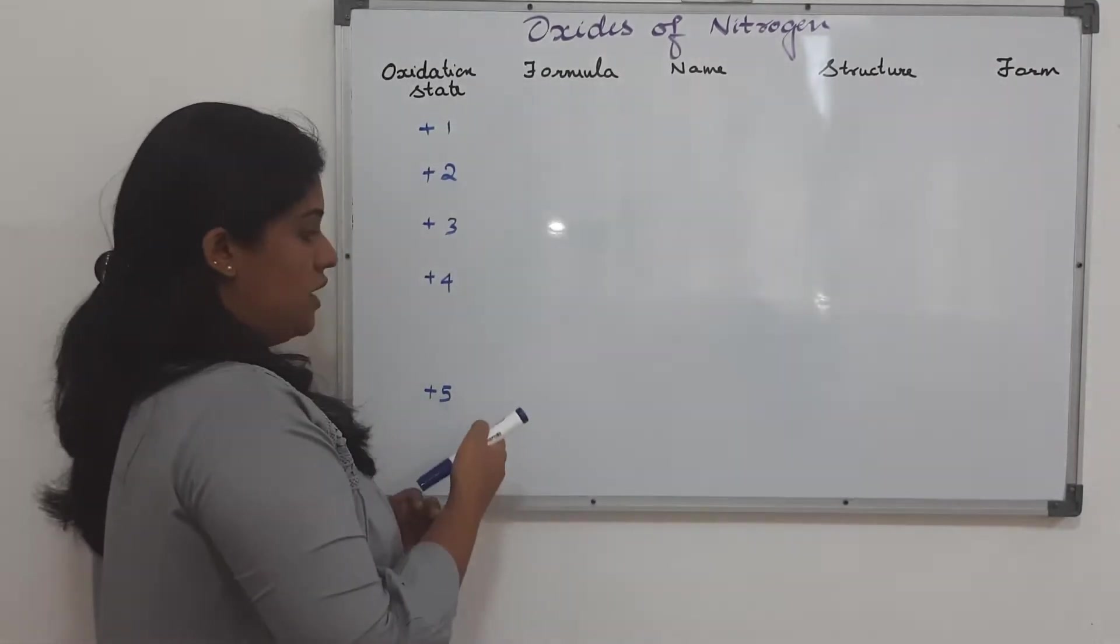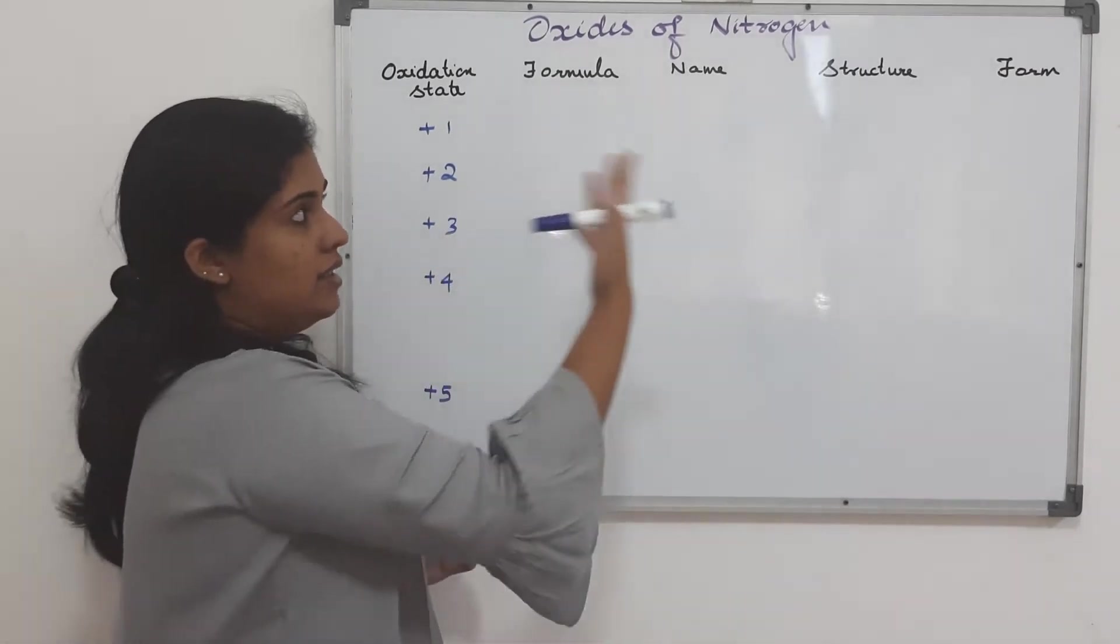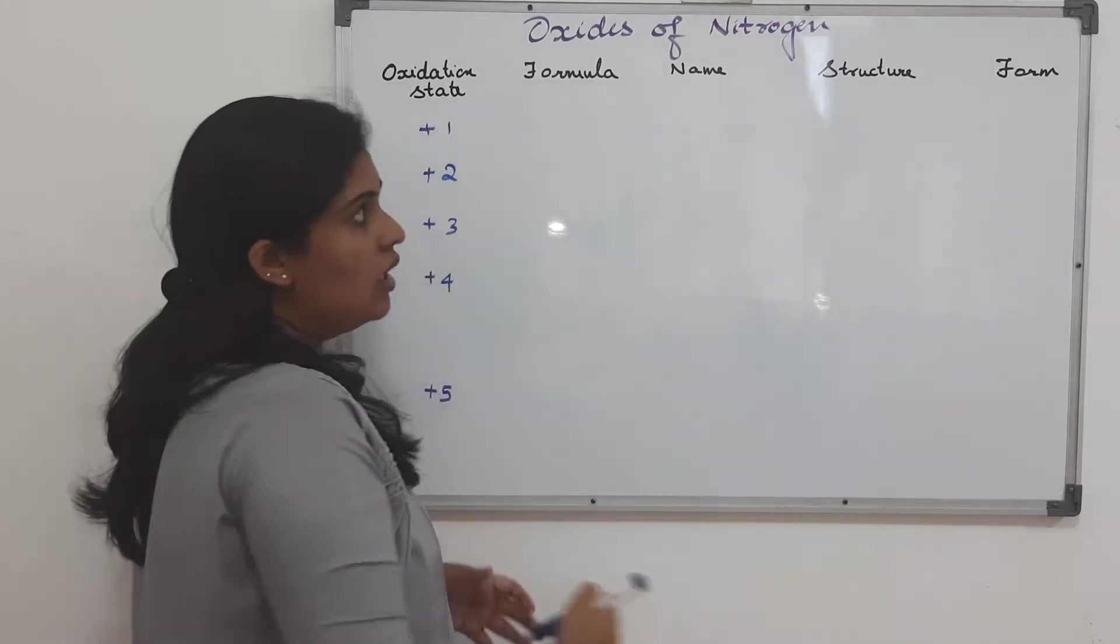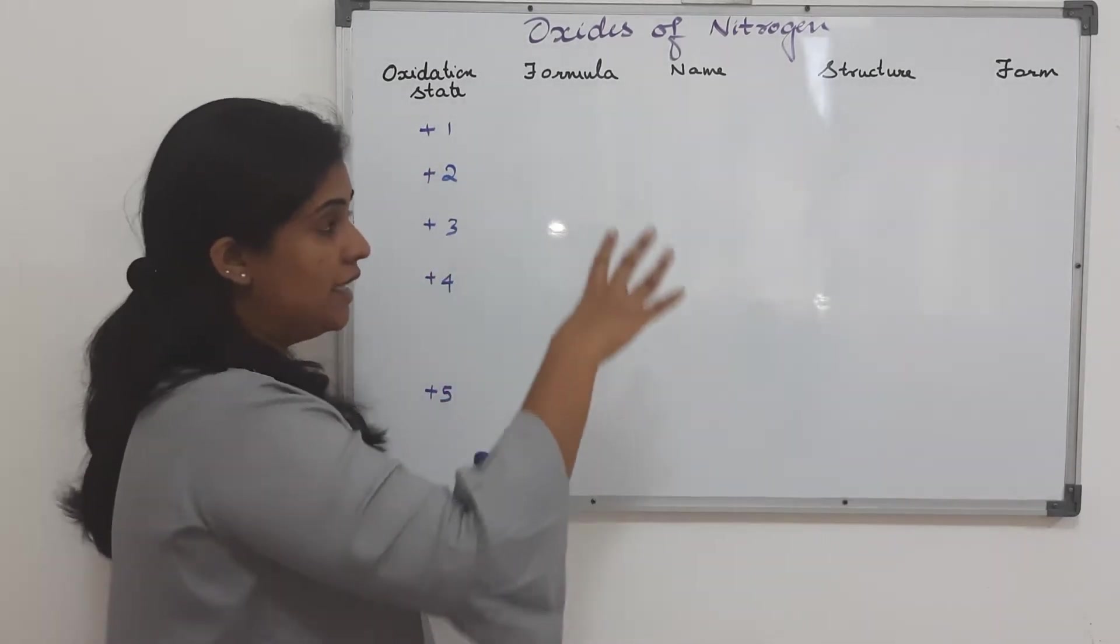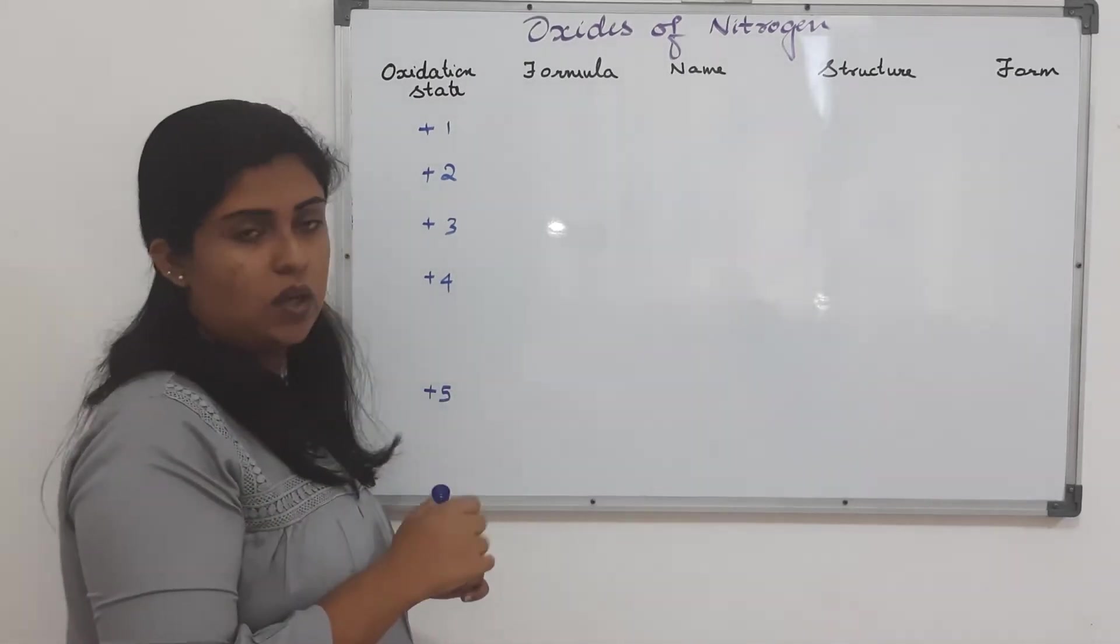Once we write the oxidation state, from this we can actually write the formula and from the formula we can easily write the name. Once we have the formula we will be able to write the structure. And from the structure finally we will write in what form they exist, that is whether they are a solid, gas or liquid.